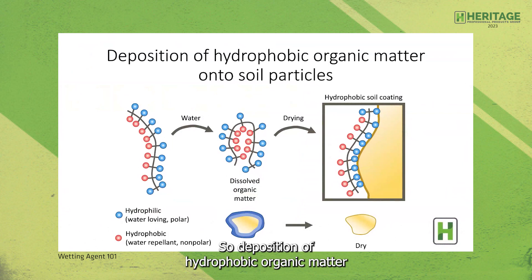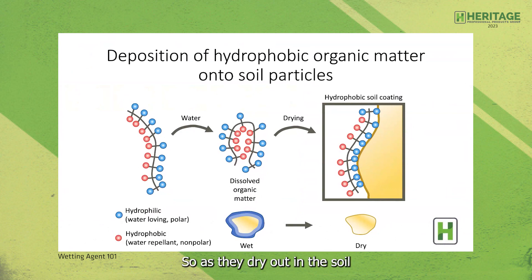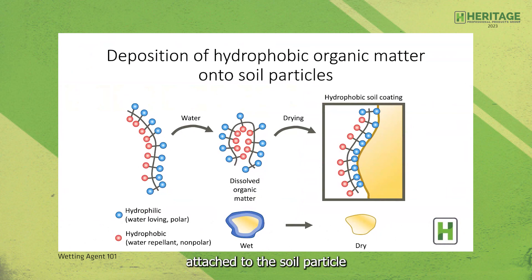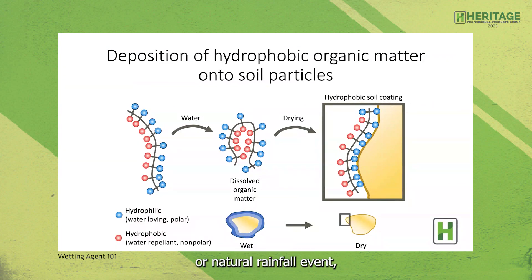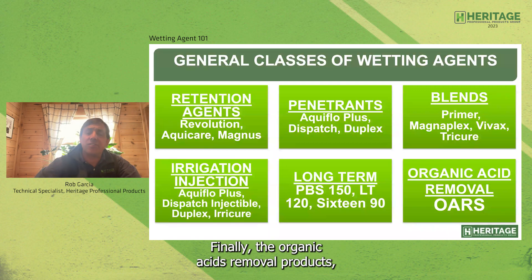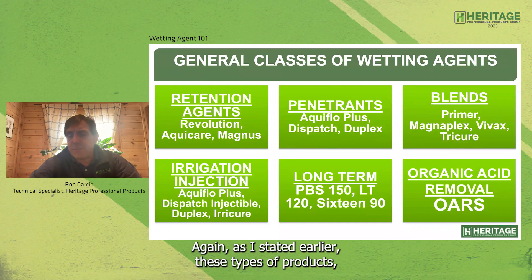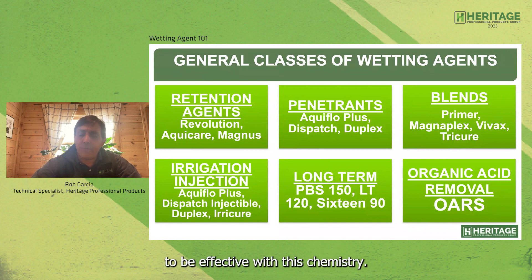Looking at the deposition of hydrophobic organic matter on soil particles: we have the hydrophilic, water-loving polar part of the molecule and the hydrophobic, water-repellent non-polar part, plus dissolved organic acids. As the soil dries down and becomes lower in moisture, organic acids attach to the soil particle and create a coating so that during the next irrigation cycle or rainfall event, we're not able to hold any water on the soil particle, creating a very dry hydrophobic condition. Organic acid removal products — like ORs — essentially strip the organic acids off the soil particle, but they require repeated applications to be effective.